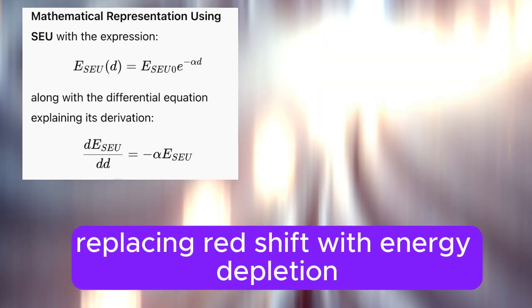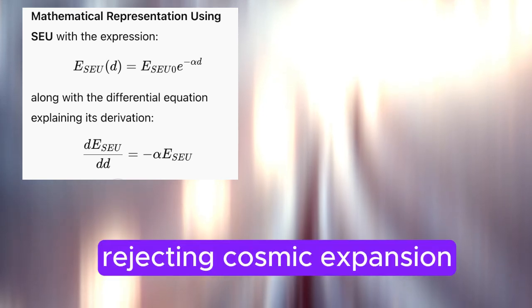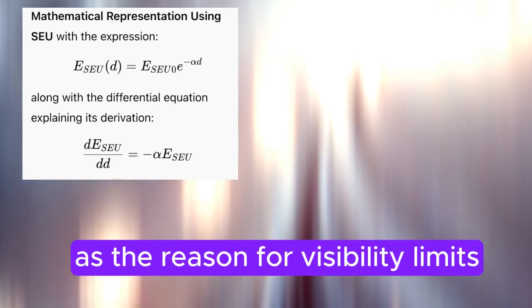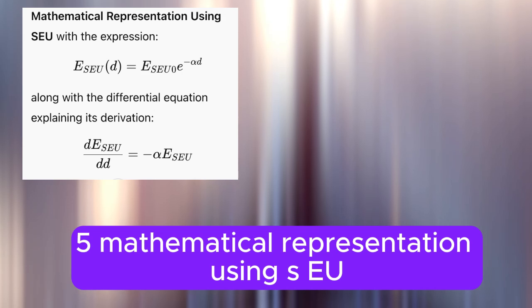The threads and spin-ons theory differs by replacing redshift with energy depletion through SEU exhaustion, rejecting cosmic expansion as the reason for visibility limits, and focusing instead on thread tension and spin-on capacity.